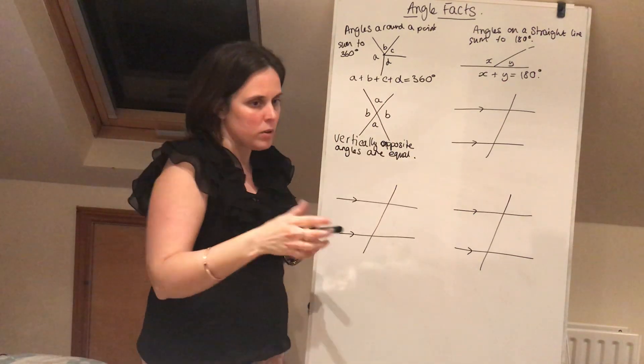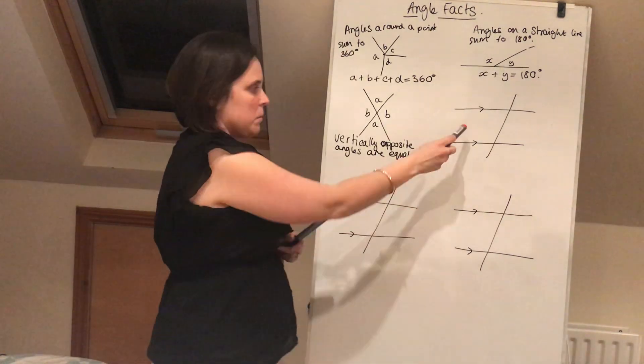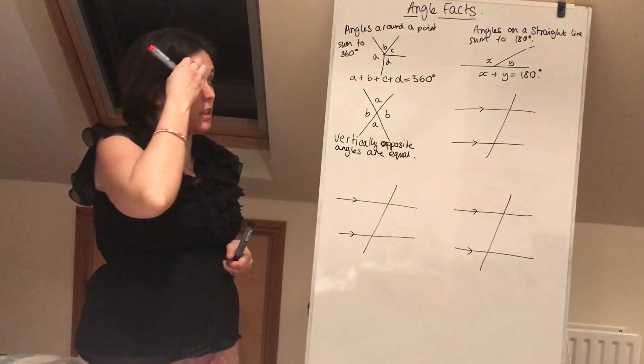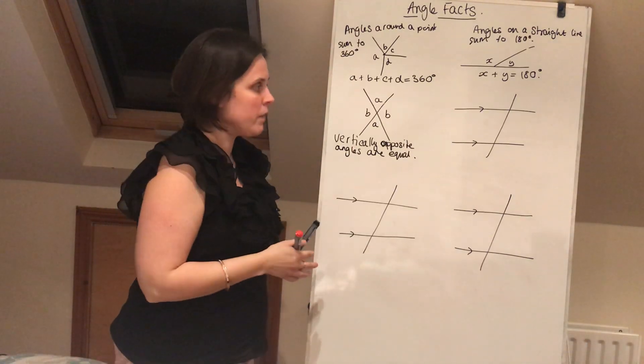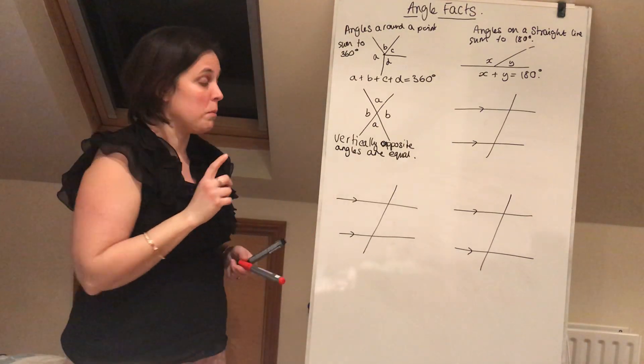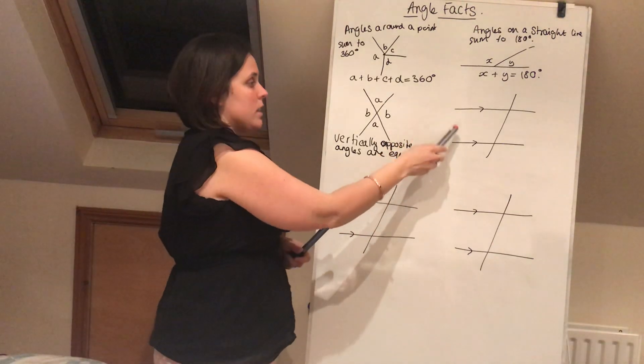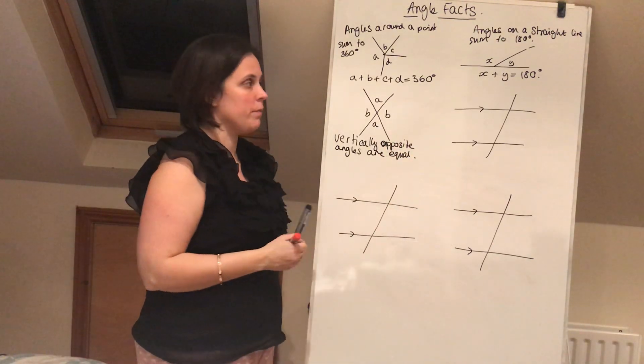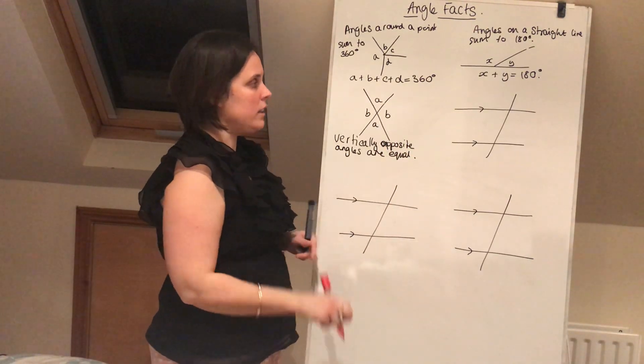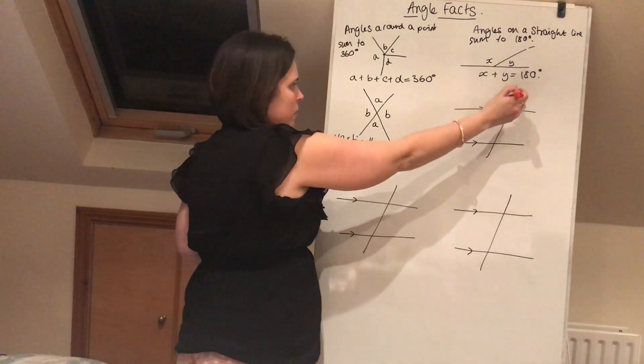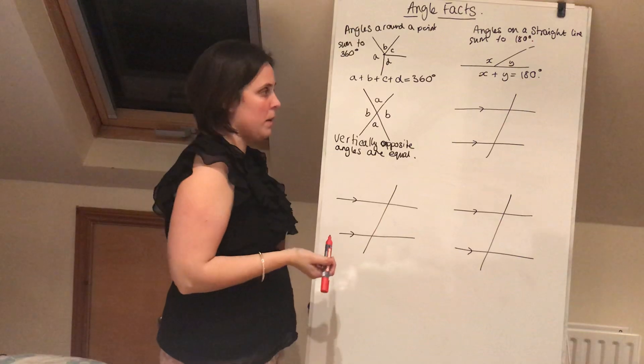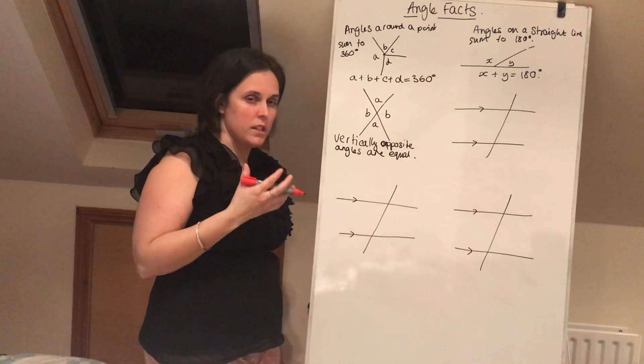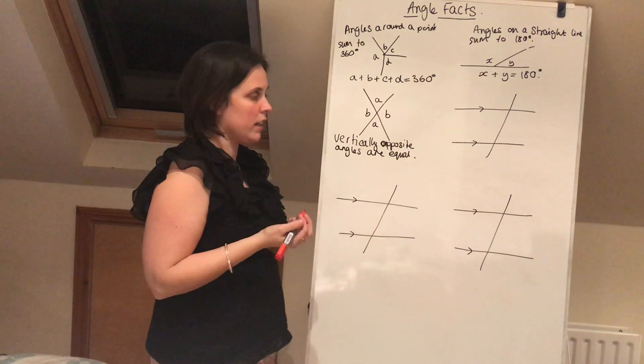Now those ones you possibly are more familiar with, but these are a little bit different. Now what I've got here is I've got three diagrams which look very very similar, but all of them have something in common, and that something in common is that we've got a set of parallel lines in them. Now if we have parallel lines and we have this line coming across them, cutting through those parallel lines, we actually have a series of interesting facts.